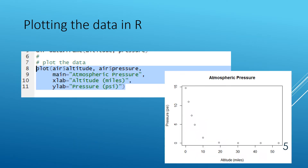Here we are using R's plot function with five arguments. The first argument is our x's, air$altitude. The second argument is our y's, air$pressure. The third argument is main equal 'Atmospheric Pressure' — that will be the title of the graph. We also have arguments for the x label and y label.